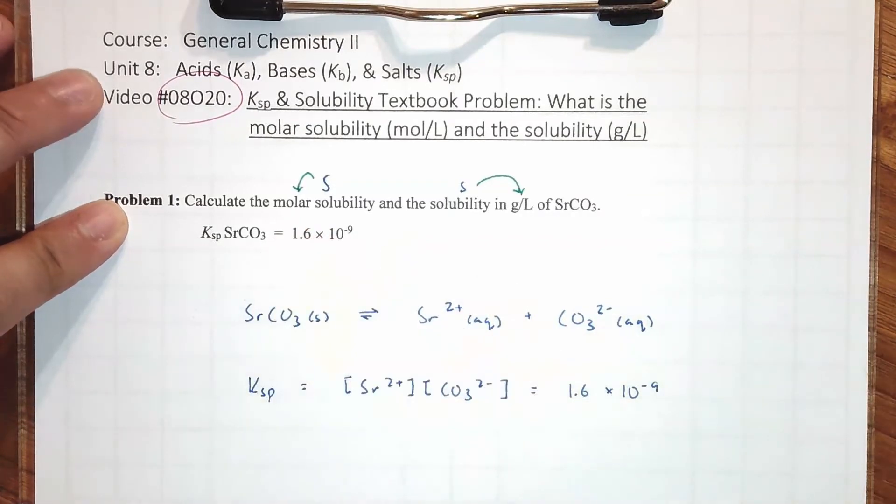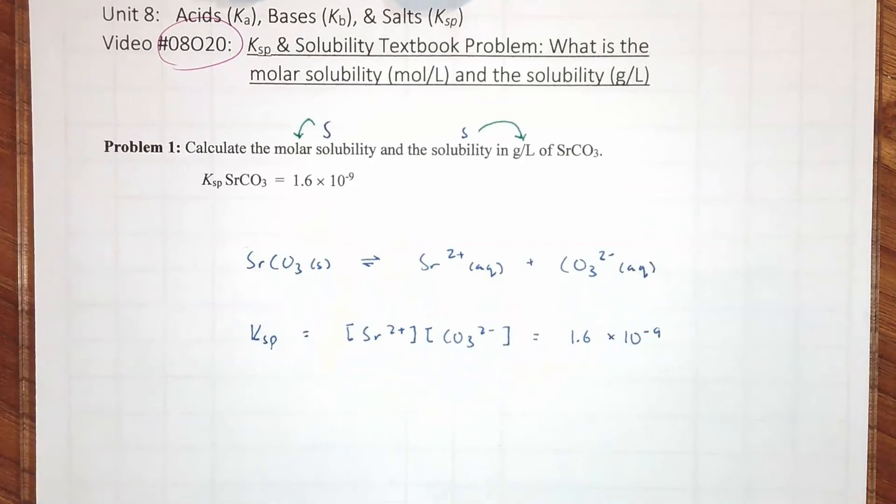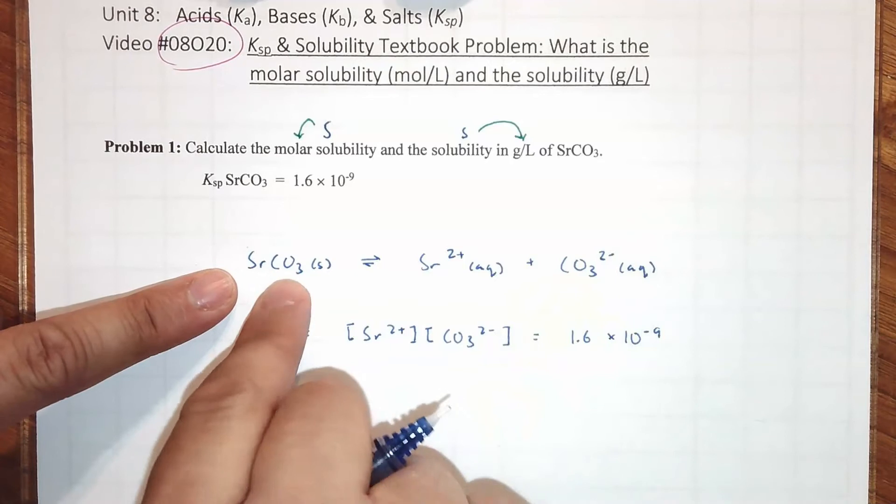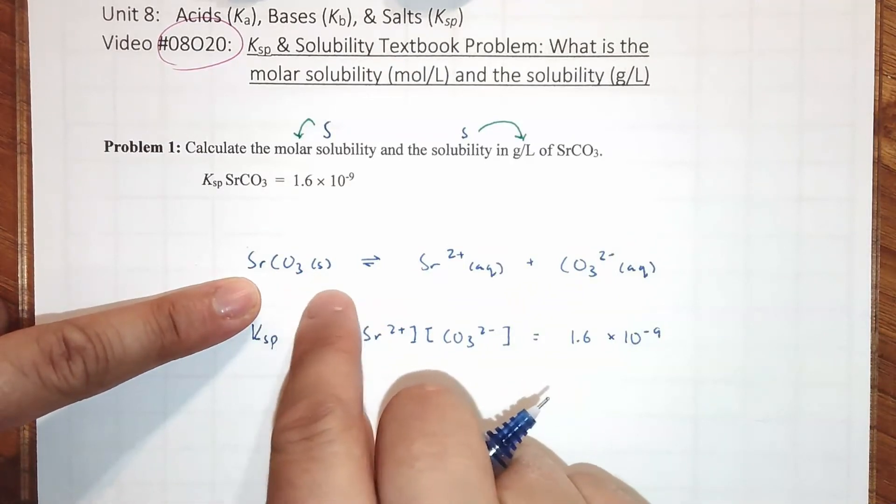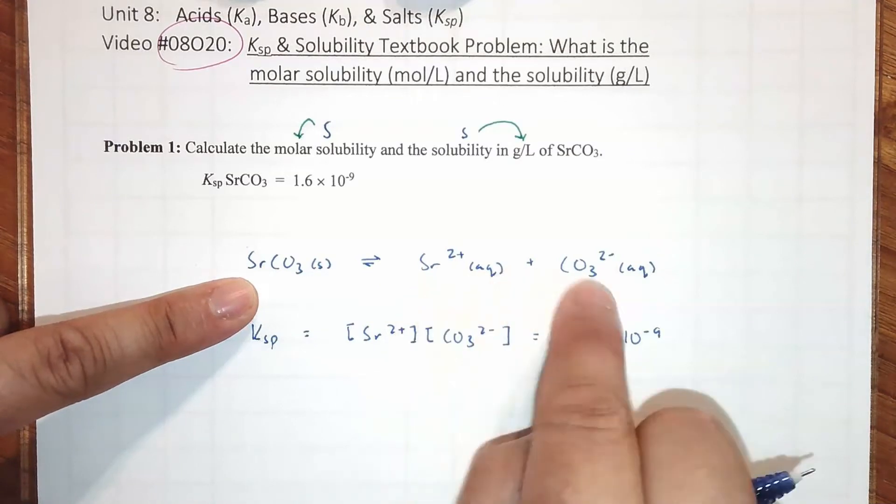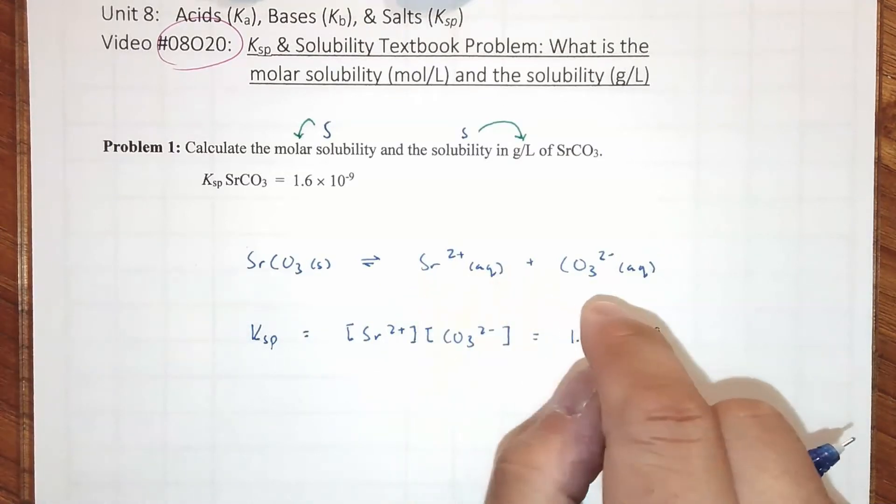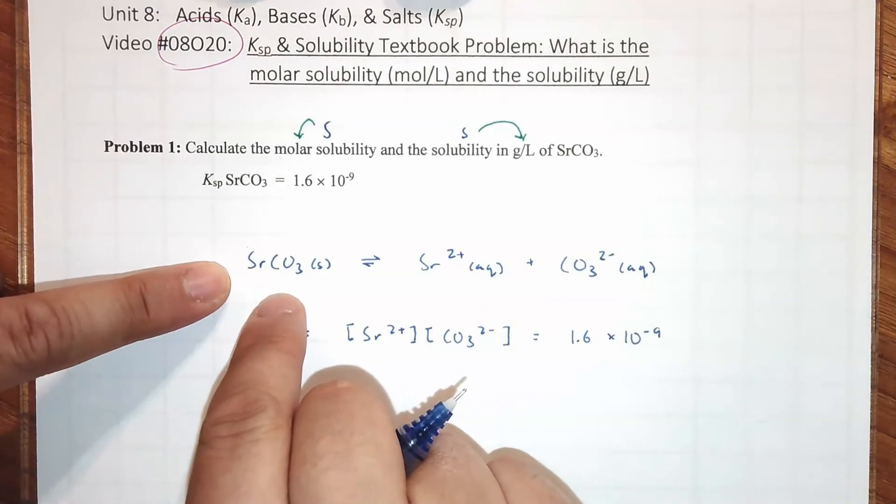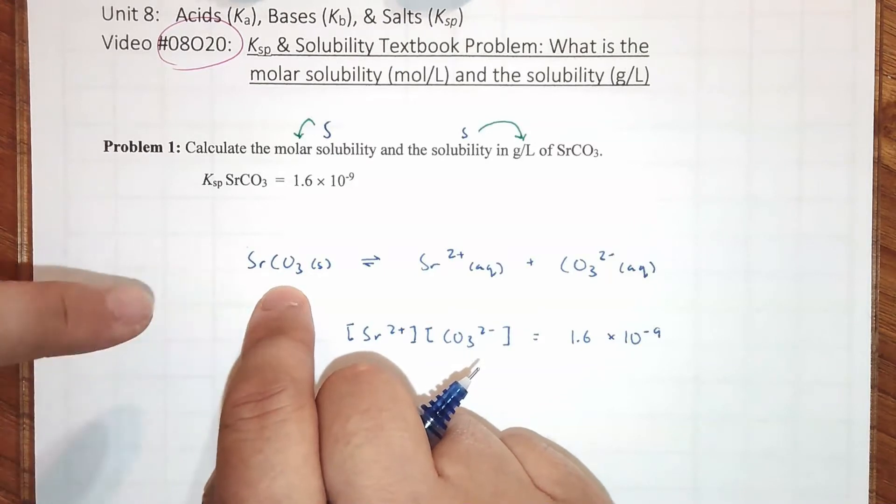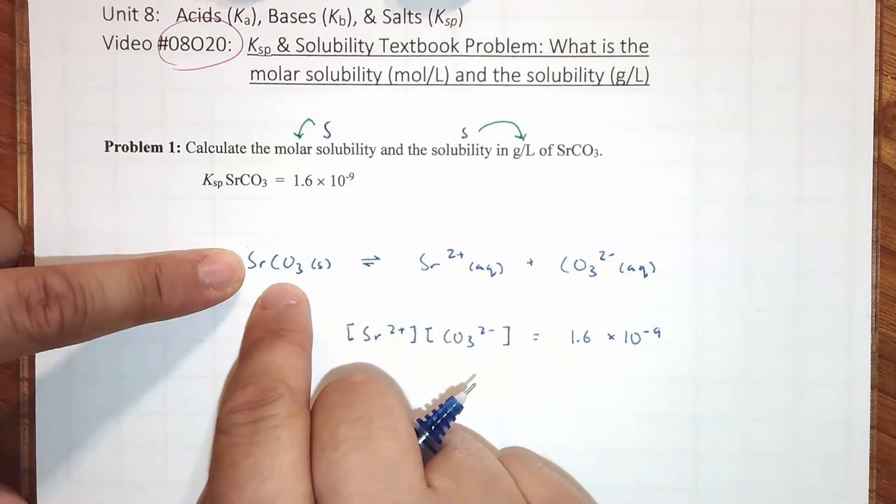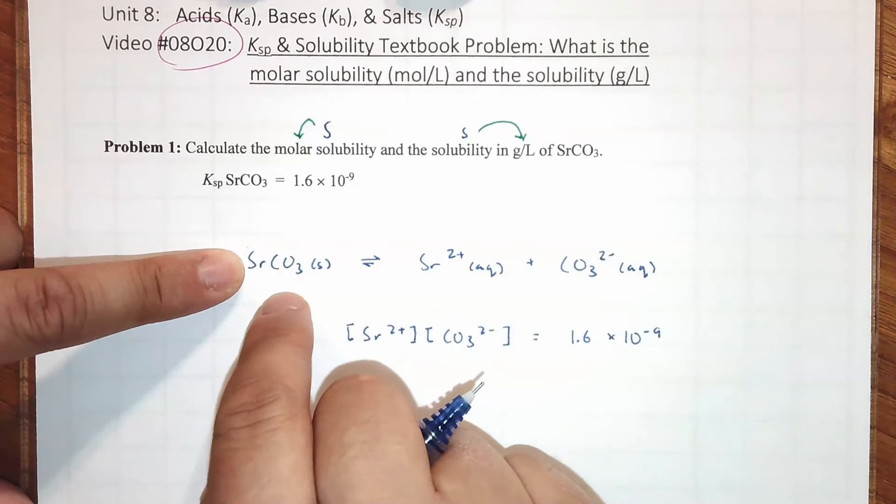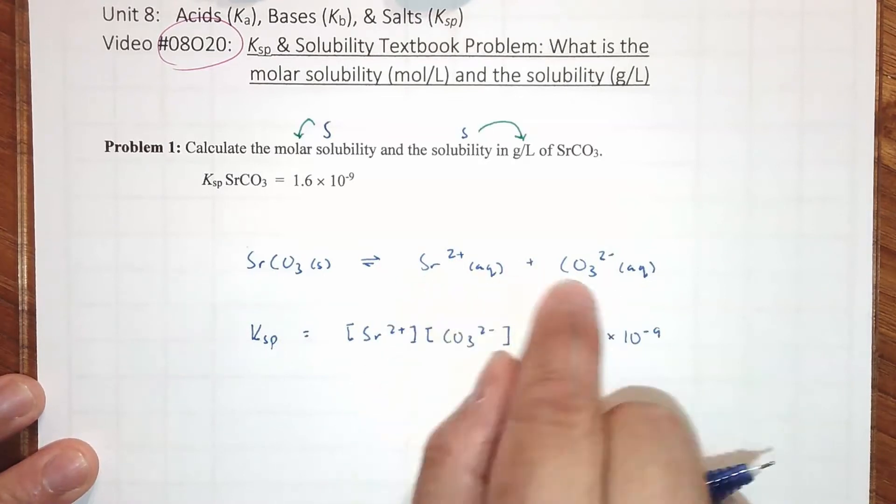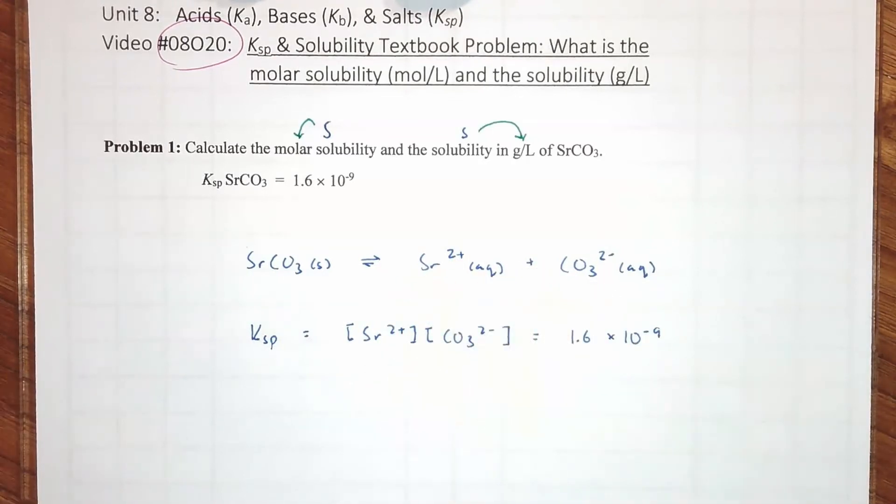You know that carbonate is CO3 2-. So these are both charged, but there are no coefficients, so we're not going to square anything in our KSP expression. I also feel a lot better, it's like a security blanket if I write out the KSP expression. CO3 2-. And we do have a number for that. It's low. 1.6 times 10 to the -9. The idea of solubility, in particular molar solubility, is the amount of solid that does dissolve.